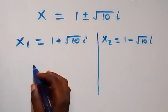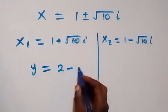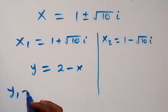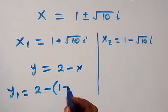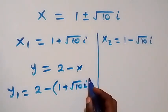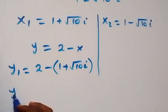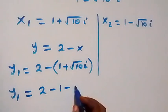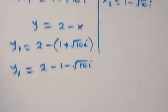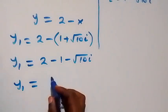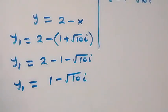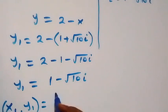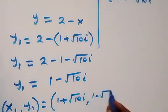To get the value of y from equation three, which is y equals to 2 minus x. On this side, y1 equals to 2 minus x1, which is 1 plus root 10 i. Opening the brackets, y1 gives us 2 minus 1 minus root 10 i, which means y1 equals to 1 minus root 10 i. The first set of solutions, x1 comma y1, equals 1 plus root 10 i comma 1 minus root 10 i.